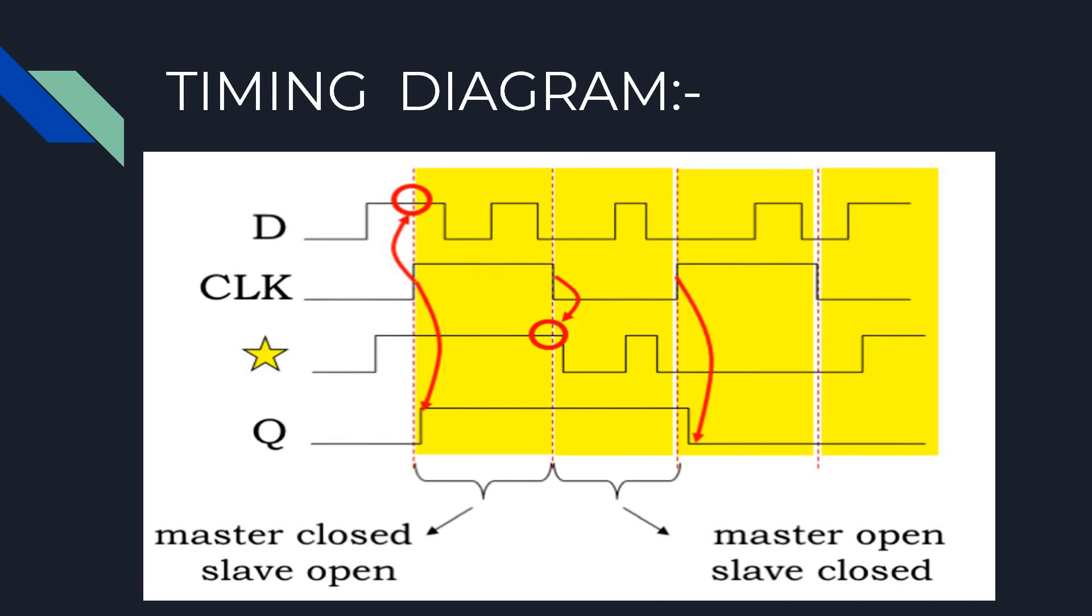Remember though the star signal is stable while the clock is high, since the master latch is closed. So the Q signal is also stable after the initial transition if the value saved in the slave latch is changing.